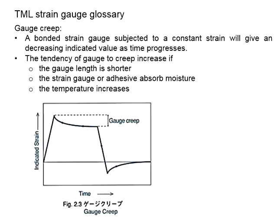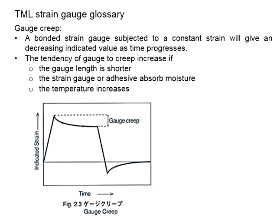However, what was actually happening is that the indicated value reduces over time, reduces further, and it goes back to zero strain. This is even though the constant strain still remains within the specimen. In this case, what was indicated by the strain gauge does not fully represent the actual situation of the specimen. This will affect the results.